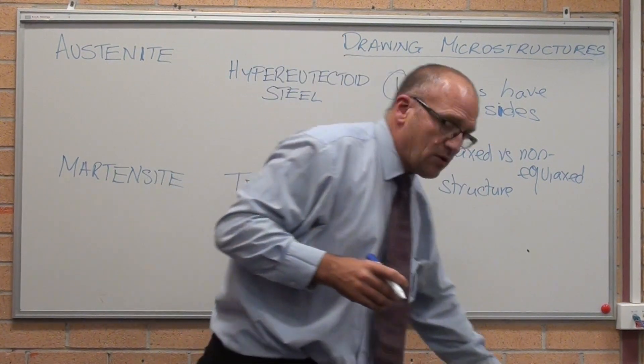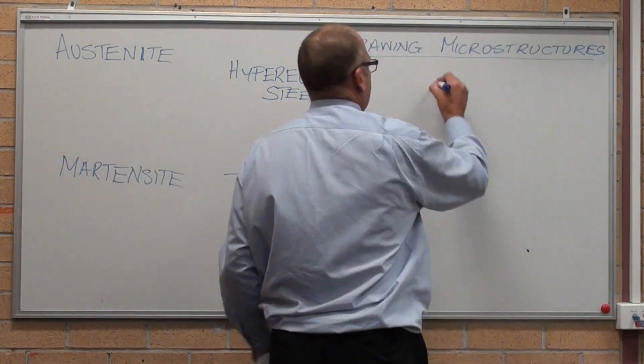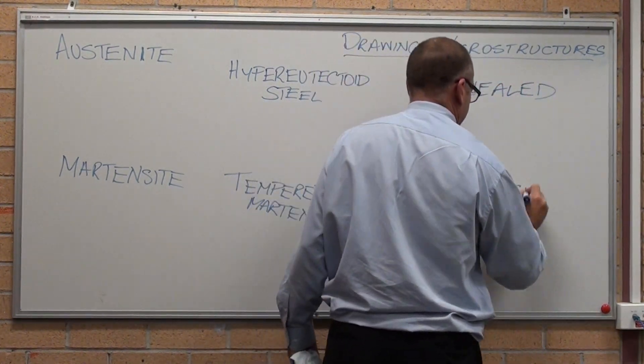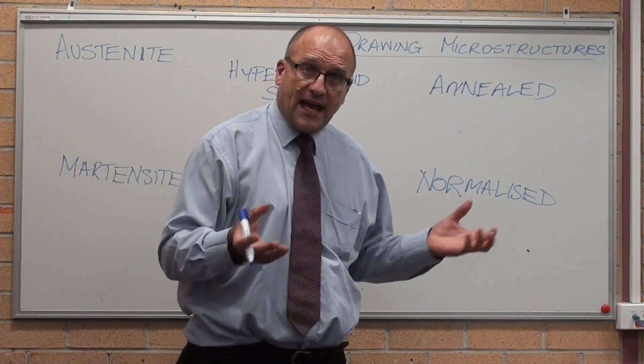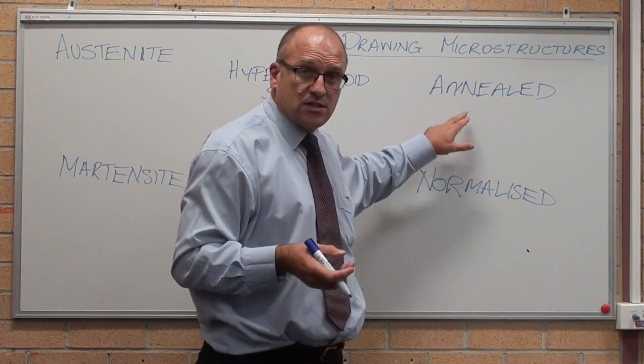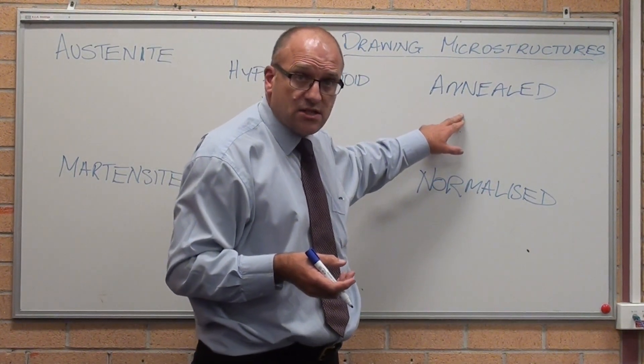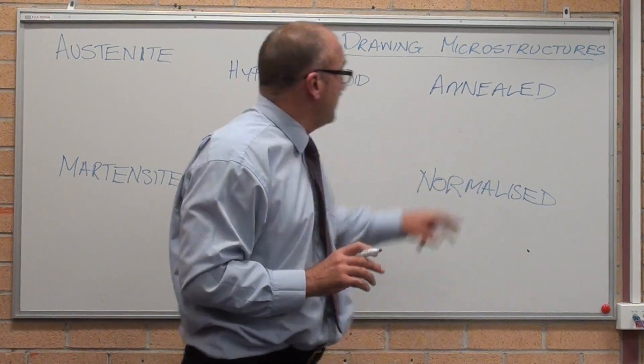So let's have a look at a few examples. We'll talk steels at the moment. If you're doing an annealed aluminium, then obviously there's only one phase, so you don't need to bother about perlite.